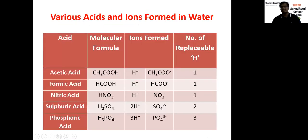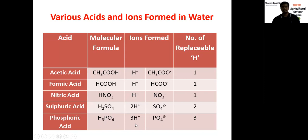Let's see various acids and ions formed in water. Acetic acid has the formula CH3COOH. Put into water, it forms H+ and CH3COO-. For acetic acid, formic acid, and nitric acid, there is only one replaceable hydrogen atom. But in the case of sulfuric acid, H2SO4, it contains two replaceable hydrogen atoms and splits into 2H+ and SO4 2-. For phosphoric acid, H3PO4, it contains three H+ ions in aqueous state, forming 3H+ and PO4 3-. The total number of replaceable hydrogen atoms for phosphoric acid is three.